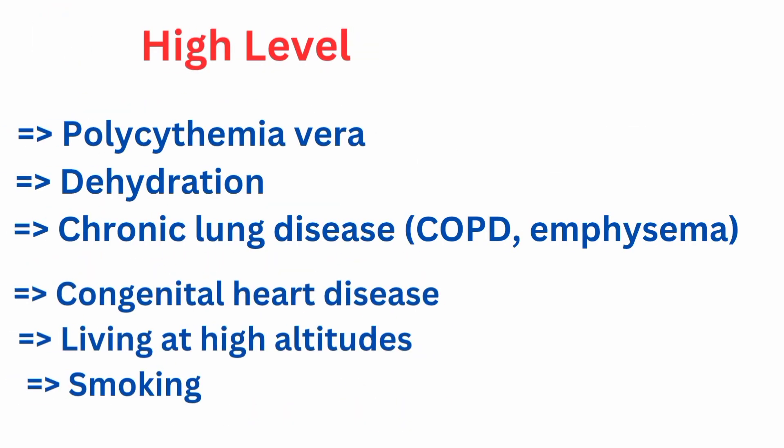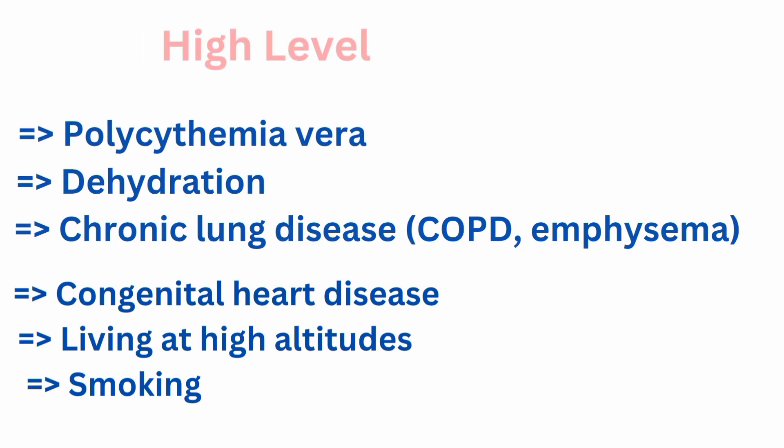High levels of hemoglobin are seen in polycythemia vera, dehydration, chronic lung diseases like COPD and emphysema, congenital heart diseases, living at high altitudes, and smoking.